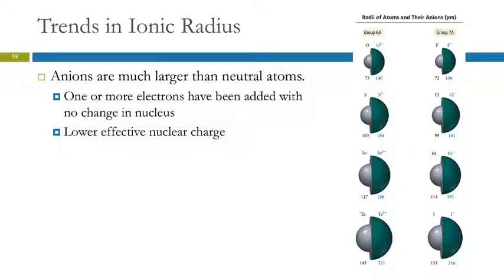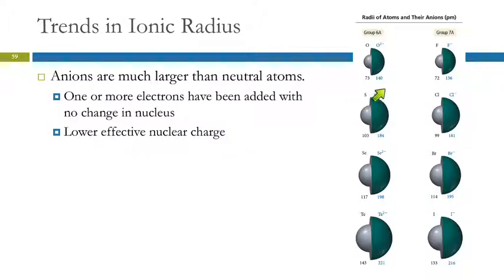Anions get bigger. When you add electrons to an atom with no change in the number of protons, the nuclear charge effectively becomes lower — electrons are held more loosely and the radius increases. Going from oxygen to oxide, the ion almost doubles in size. So cations get smaller; anions get larger.